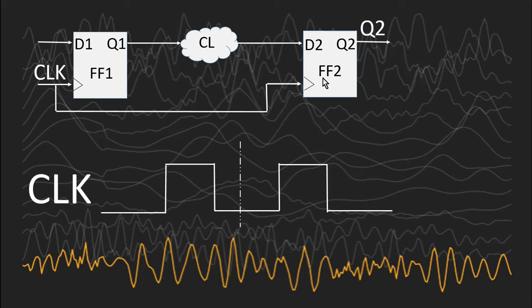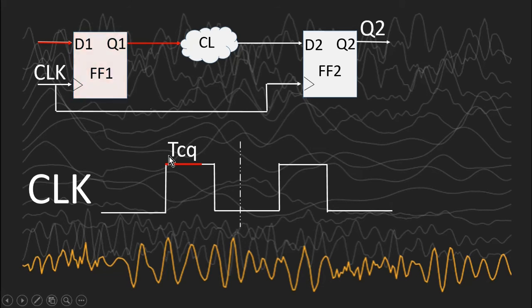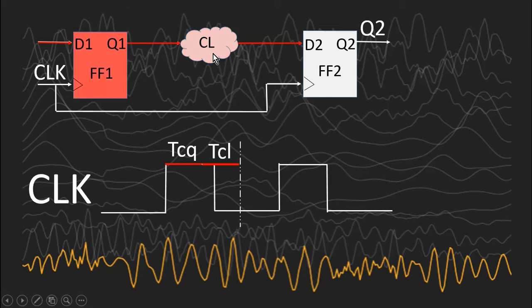Now let us examine the behavior of this critical path when the first clock edge is received. As soon as the first positive edge of the clock is applied, flip-flop 1 will start transmitting the input value available at its input D1 to its output Q1, and it will take T_CQ amount of delay to do so. So after T_CQ delay, the input value will be available at the output of the flop, which is the input of the combinational logic. This combinational logic has a delay of T_CL, so in T_CL amount of time it will pass its input value to its output, which is the input of the second flip-flop.